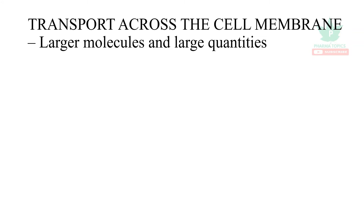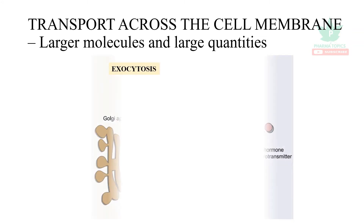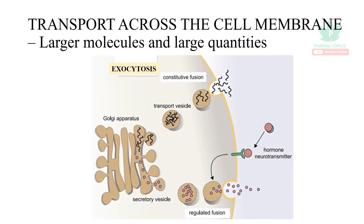Another mechanism is exocytosis, which occurs in the Golgi apparatus. It expels stored neurotransmitters or proteins out of the cell through a process called exocytosis.